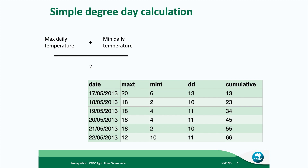The way we often measure this temperature, or at least bring it into a calendar day type situation, is by accumulating the average daily temperature for each calendar day — basically maximum temperature plus the minimum temperature divided by two. As you can see in the spreadsheet below, I've calculated the average daily temperature or day degrees for each day, and then I've accumulated those. That's how we measure between one part of the life cycle and the next, or the phenology cycle of the plant.